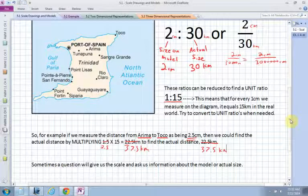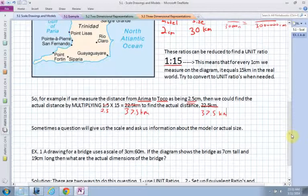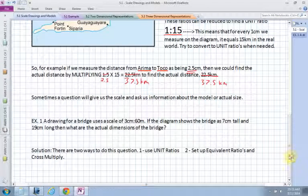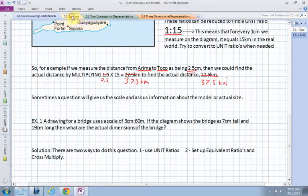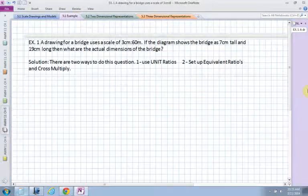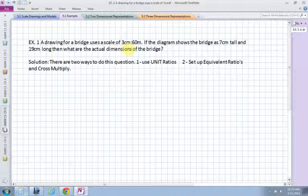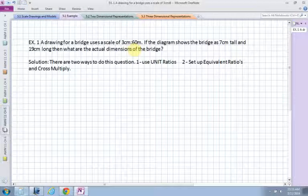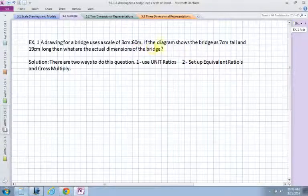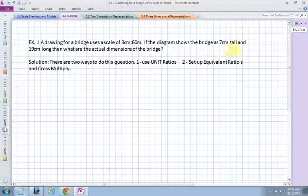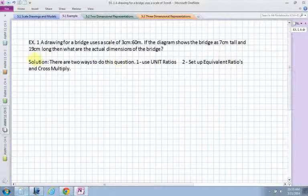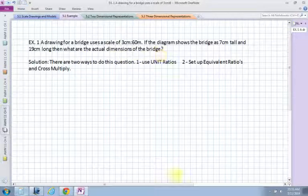Sometimes a question will give us the scale and ask us information about a model or actual size. I'm going to work through this example here where a drawing for a bridge uses a scale of 3 centimeters to 60 meters. Now this time we can actually convert because meters isn't a whole lot bigger than centimeters. It's not too bad. And then it says, if the diagram shows the bridge as 7 centimeters tall and 19 centimeters long, then what are the actual dimensions of the bridge?